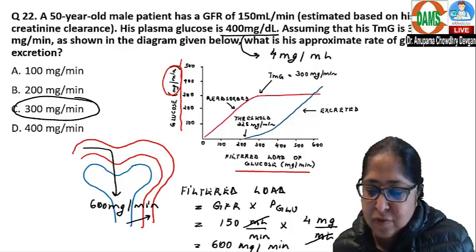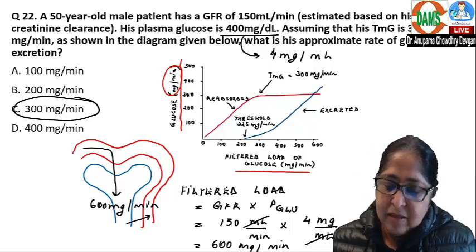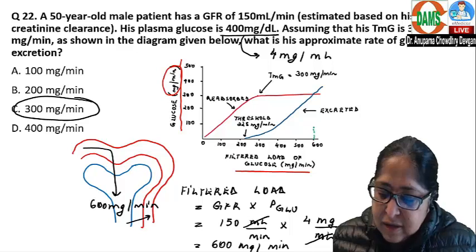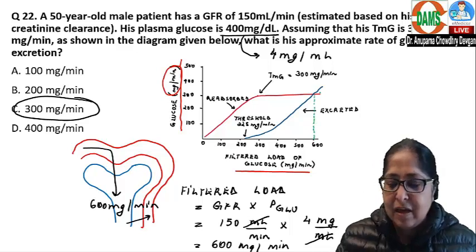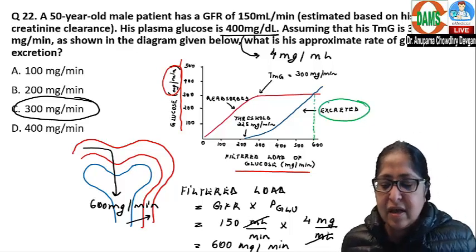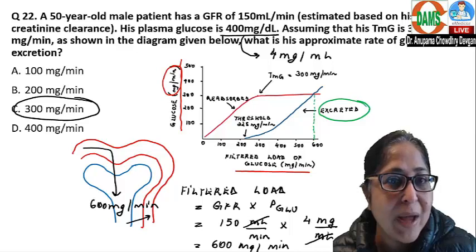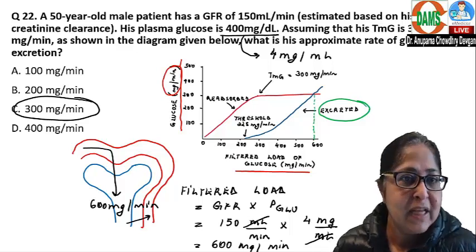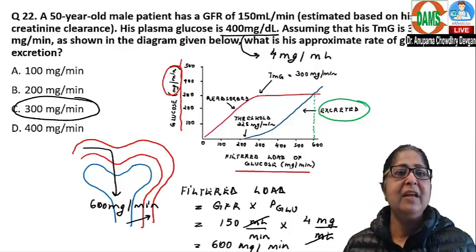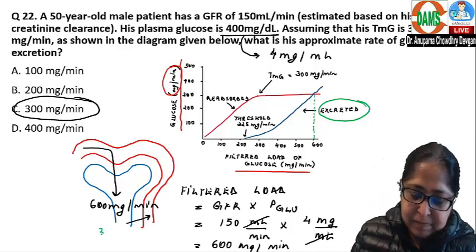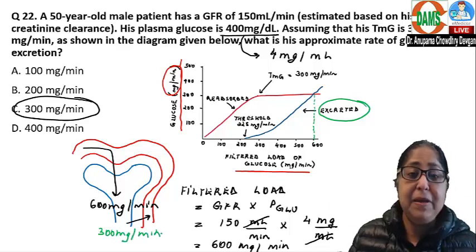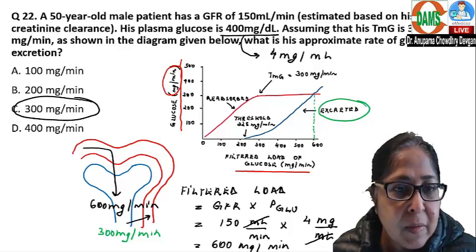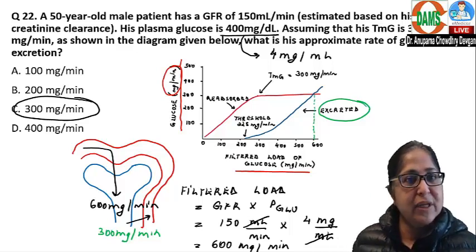You can also verify this from the graph: at a filtered load of 600 mg per minute, following the excretion line gives 300 mg per minute of glucose excreted. Whether calculated or read from the graph, reabsorption is 300 mg/min and excretion is 300 mg/min. Please be careful with the units.